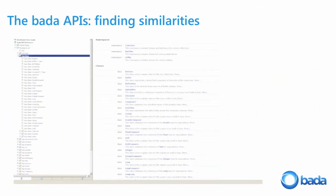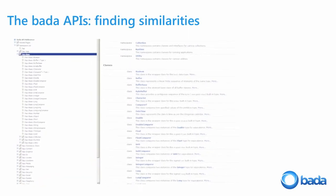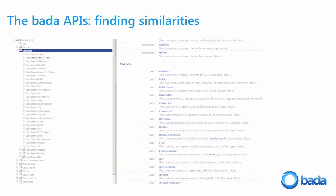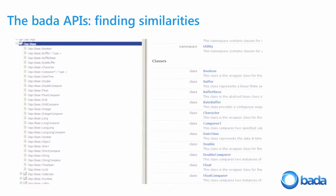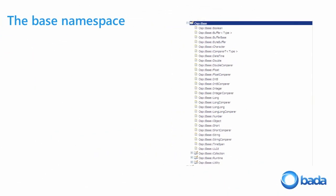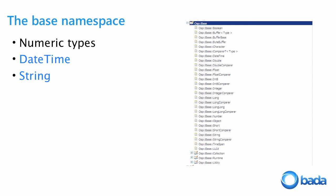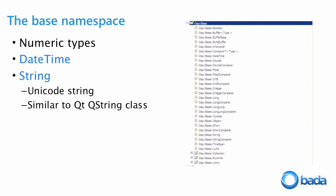Looking at the Base class in the SDK help: it includes wrappers for numeric types, date and time classes, and string classes. The string classes are Unicode strings — very similar to Qt's QString if you've done Qt development. Unlike Symbian with its 16 different descriptor classes, Bada's string classes make it easy to manipulate strings. There's also a useful utilities subclass that lets you parse strings very easily.